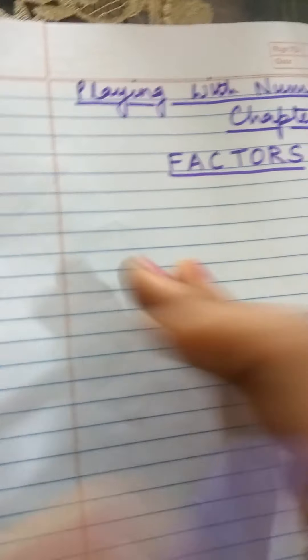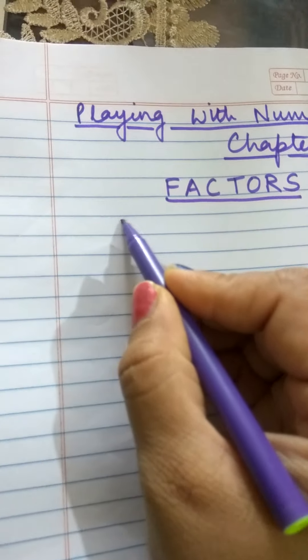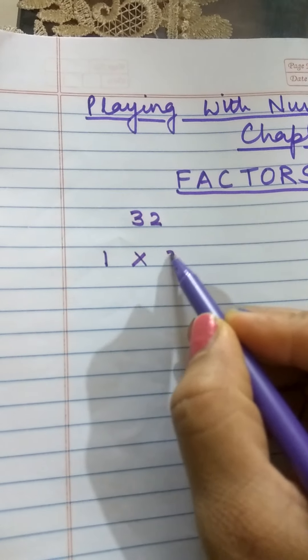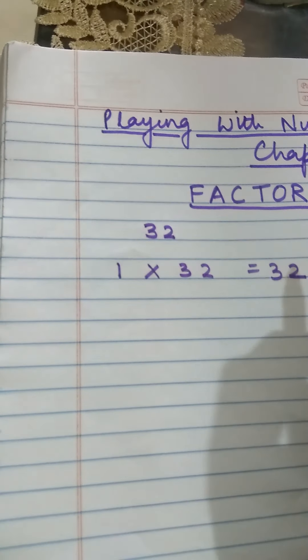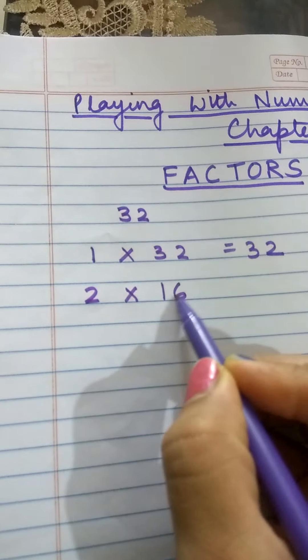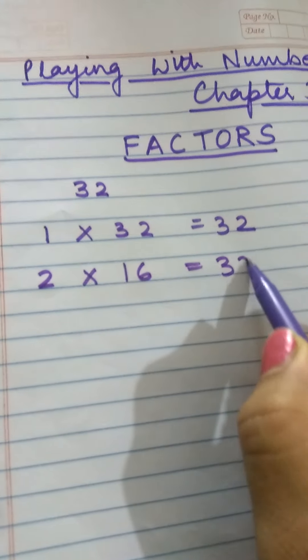So let us find factors of a given number. Let us take a number 32. Now let me try first the number 1. 1 multiplied with 32 gives me 32. So I will write this in a product form. Then 2. 2 multiplied with 16 gives 32. So I will write that.